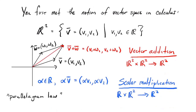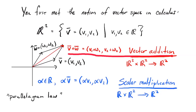Let's motivate this notion of vector space by reviewing — this is what you'll see when you review section 1.1 on your own. You first met the notion of a vector space in calculus, working in what you probably called the xy-plane. I'm going to denote it by R², because elements of it — which I'm denoting by V with a bar — are defined by two real numbers, V1 and V2. R² is the set of all two-tuples or ordered pairs. In calculus, we can add vectors: there's an operation called vector addition where you simply add their coordinates.